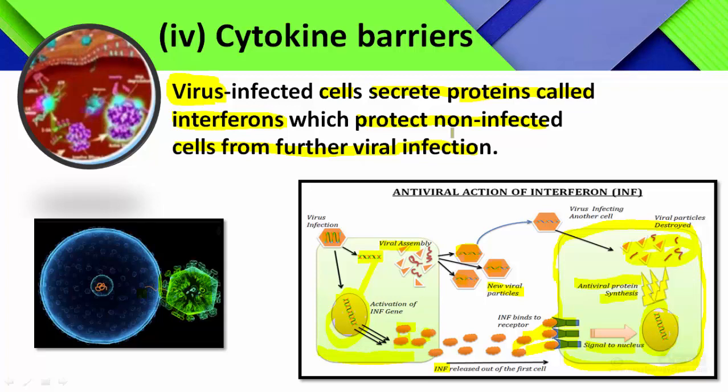So these are the four types of barriers which are providing innate immunity. Innate immunity is inborn immunity — it is non-specific immunity. It is provided by four types of barriers: physical barriers represented by skin and mucus membrane; physiological barriers represented by acid in the stomach, saliva in the mouth, and tears from the eyes.